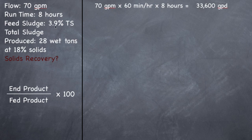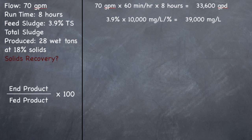The feed sludge is 3.9% total solids. Before coagulation, a sample was taken to find out how much was total solids — it's 3.9%. Remember, 1% is 10,000 milligrams per liter. So 3.9% times 10,000 mg/L per percent gives a concentration of 39,000 milligrams per liter. So the feed sludge is 39,000 mg/L.